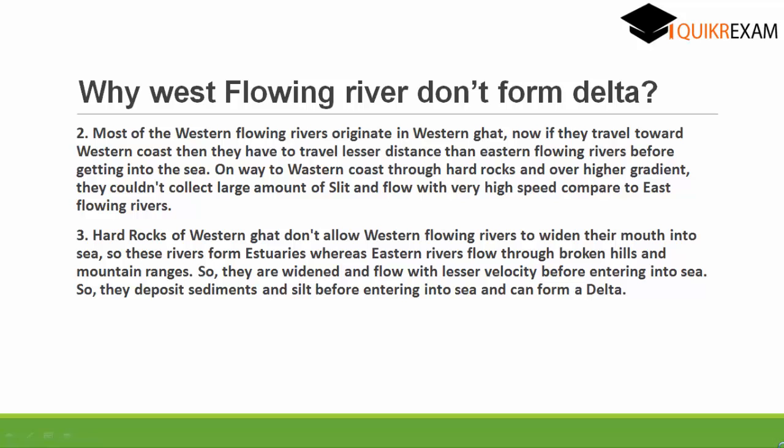Second reason: most west-flowing rivers originate from the Western Ghats and cover very less distance, so they carry very less sediments to form a Delta. Third reason: because the Western Ghats are formed of hard rocks, they don't allow the rivers to widen their mouth to form a Delta.